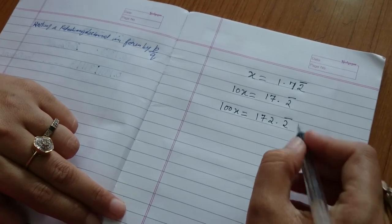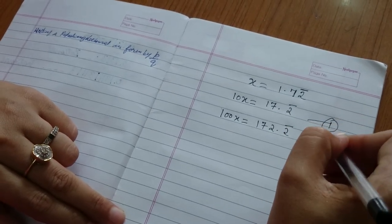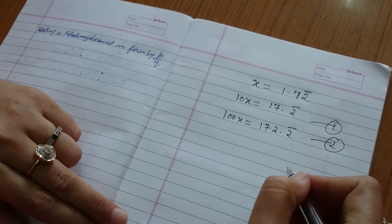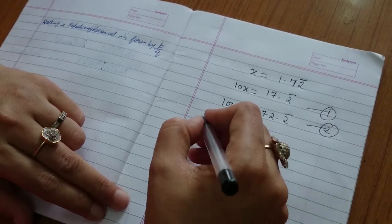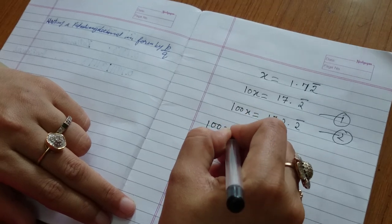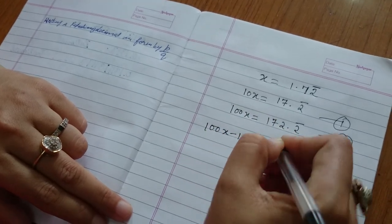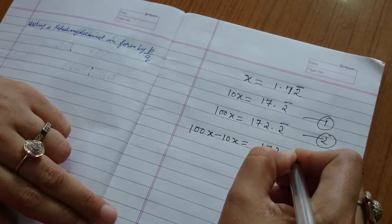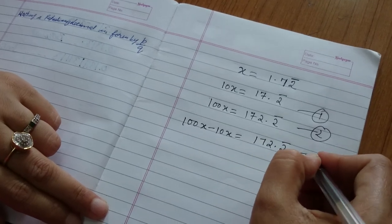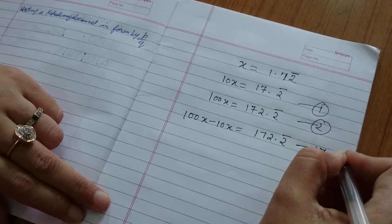Now observe these two equations. Equation 1 and equation number 2. So 100x minus 10x is equal to 172.2 bar minus 17.2 bar.